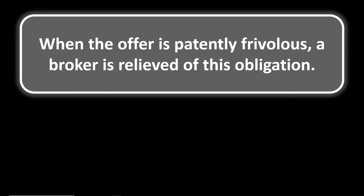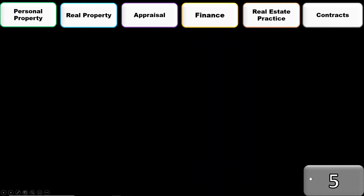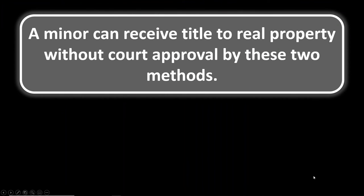Contracts number four: when an offer is patently frivolous, a broker is relieved of the obligation to present it. When an offer is obviously frivolous — for instance, a one-dollar offer on a million-dollar listing — the broker is relieved of the duty to present that patently frivolous offer.